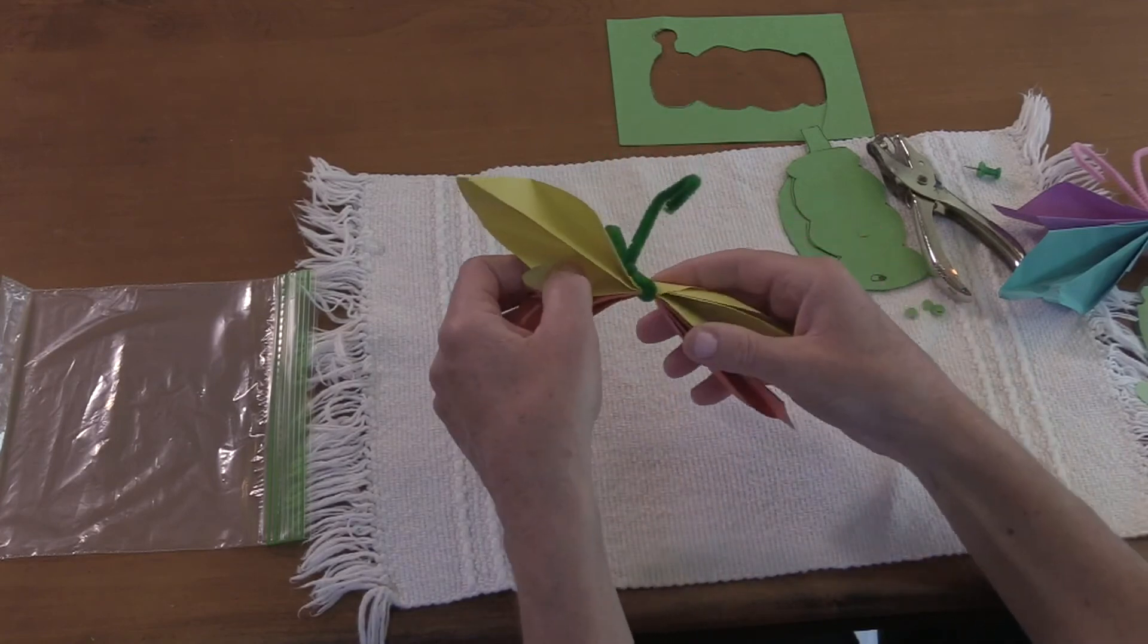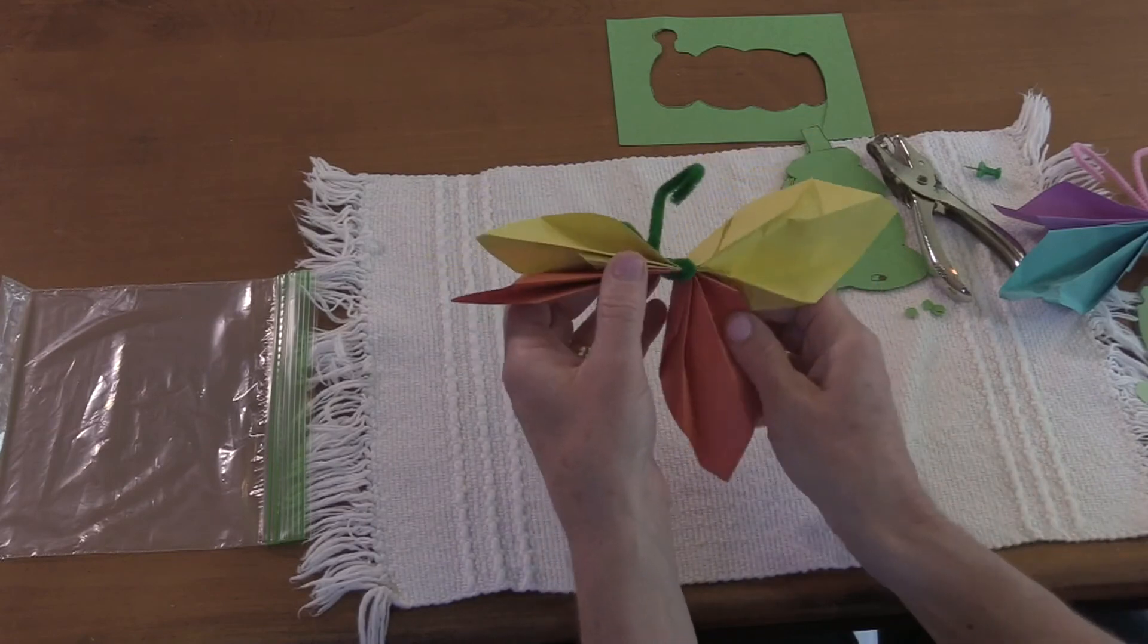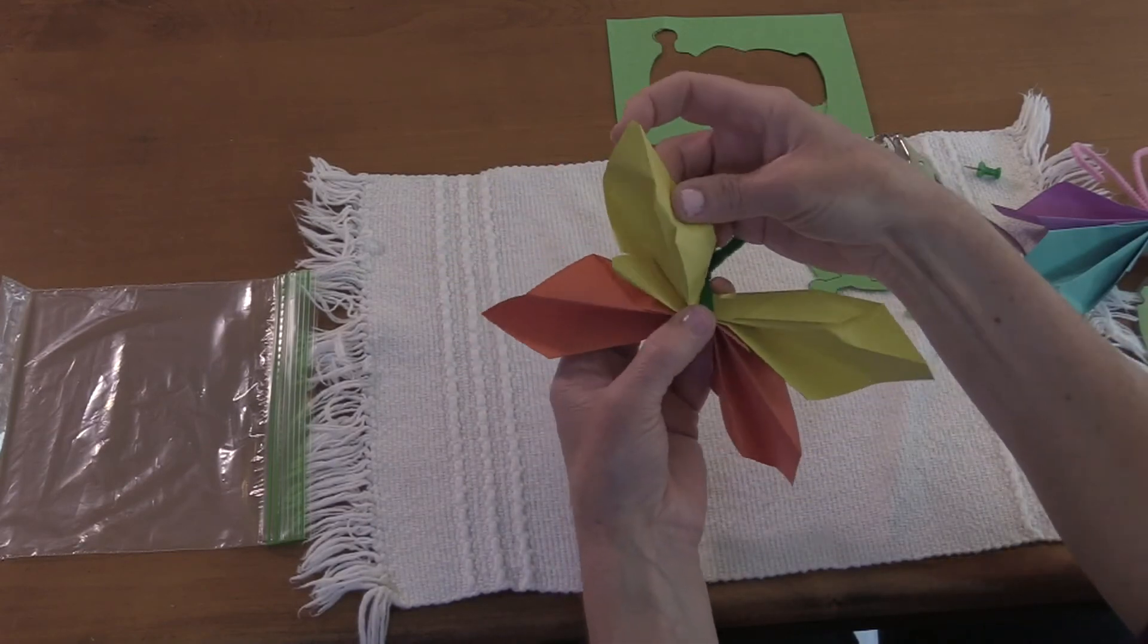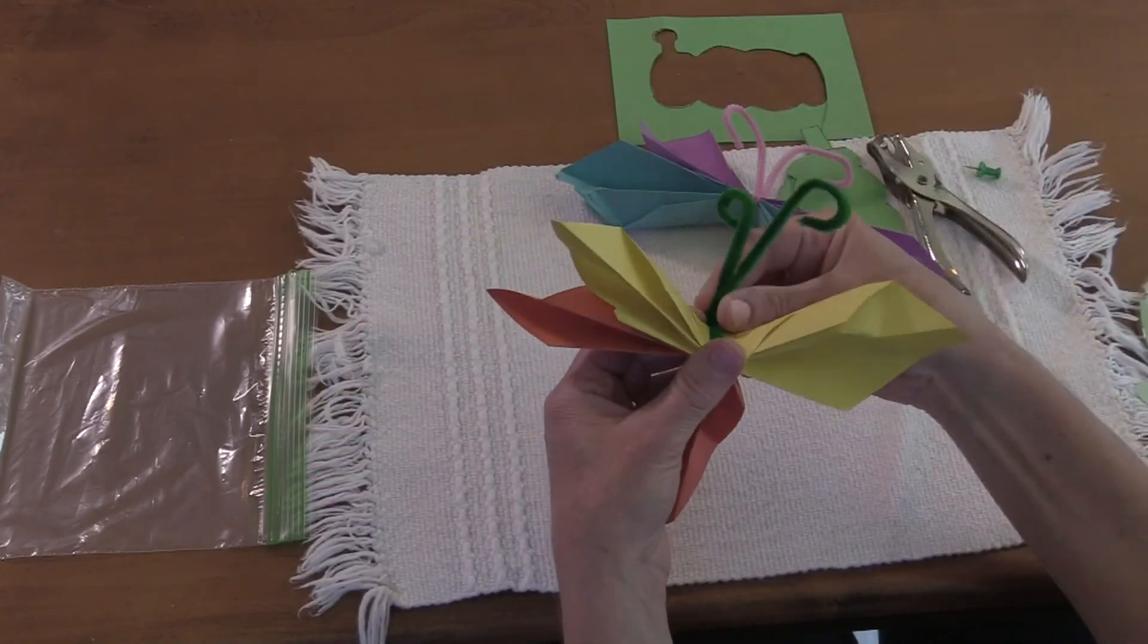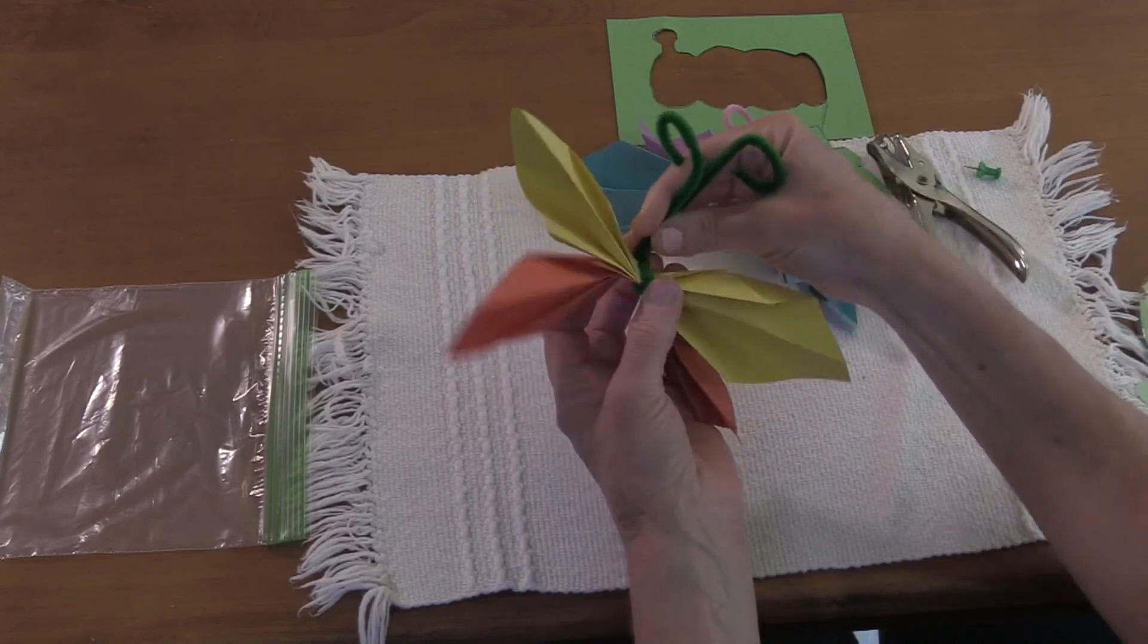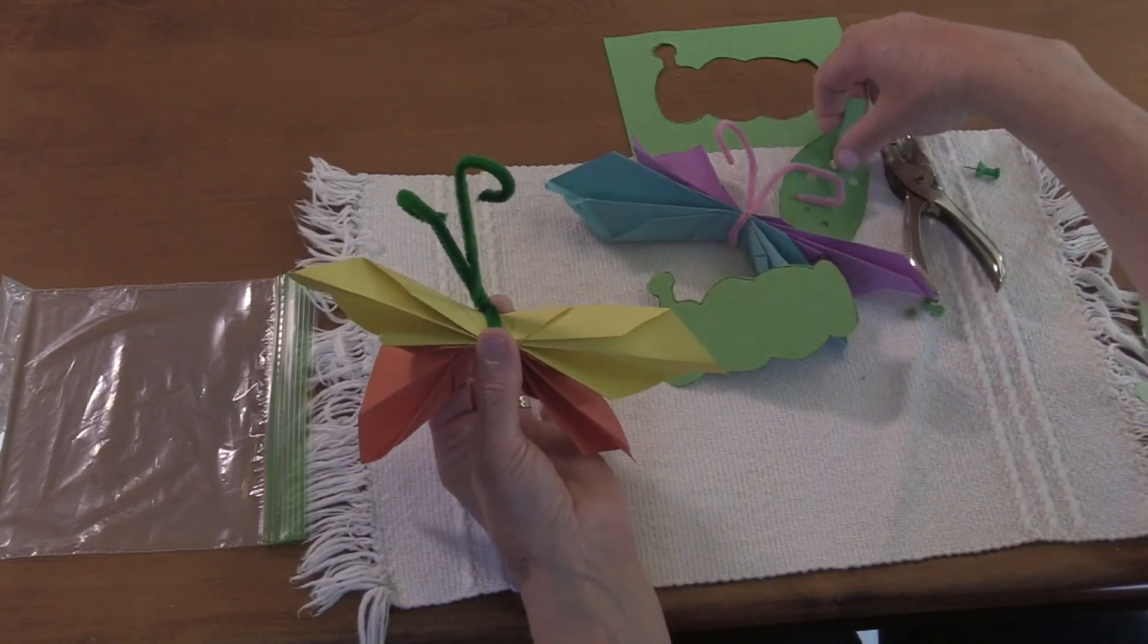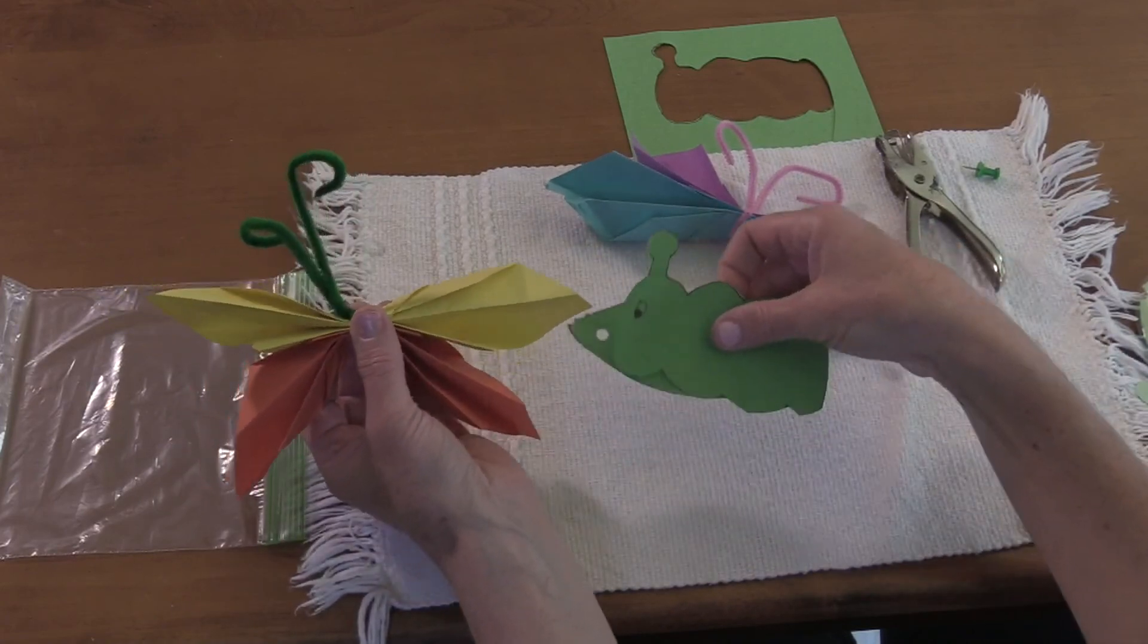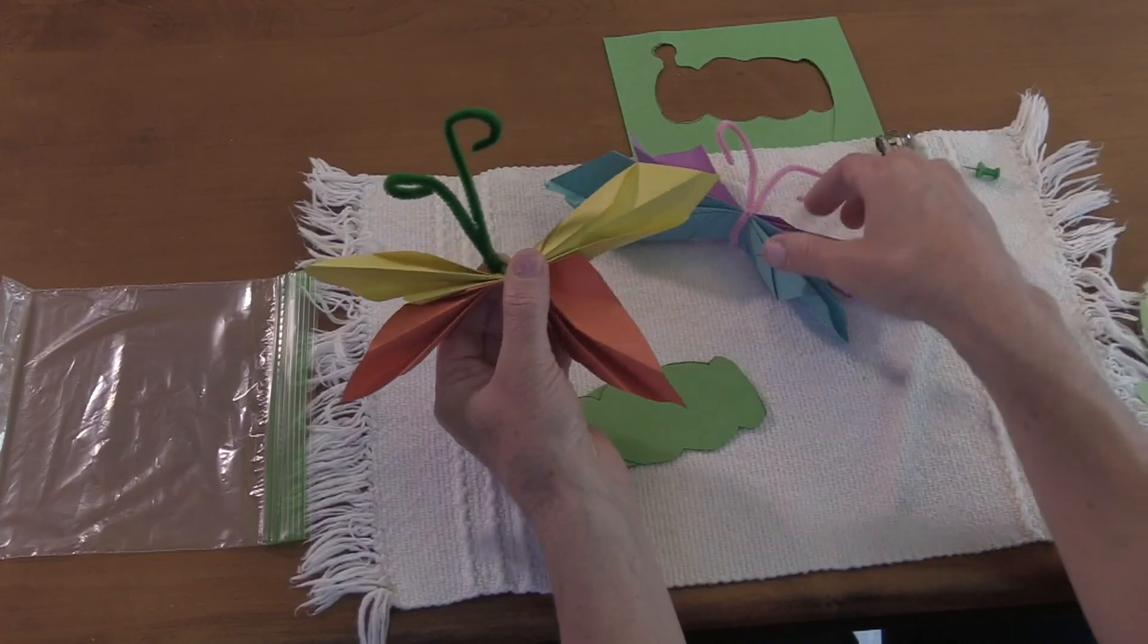And now I have a beautiful butterfly. So my caterpillar will eat through the leaf, into the chrysalis, and turn into a beautiful butterfly.